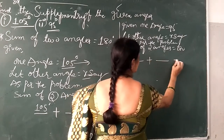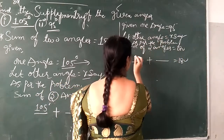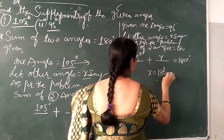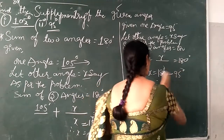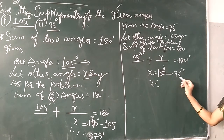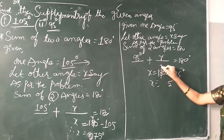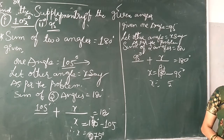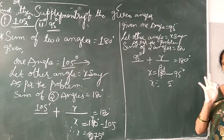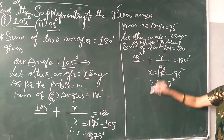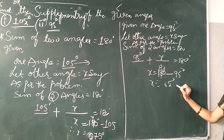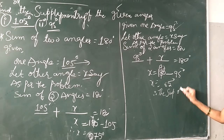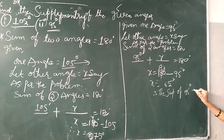Two angles — their sum means plus — is equal to 180 degrees. So x is equal to 180 minus 95. 10 minus 5 is 5, and here it will be 7. 17 minus 9 — let's count: 10, 11, 12, 13, 14, 15, 16, 17 — that is 8. So x is equal to 85 degrees. Therefore the supplementary angle of 95 degrees is 85 degrees.